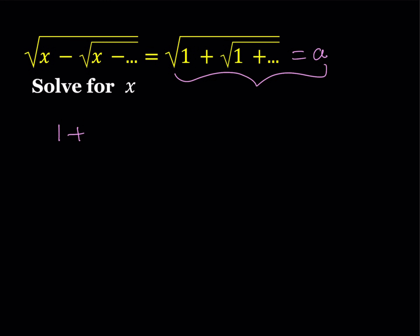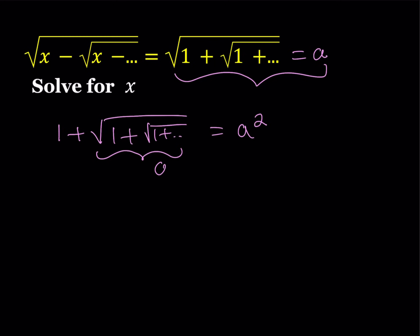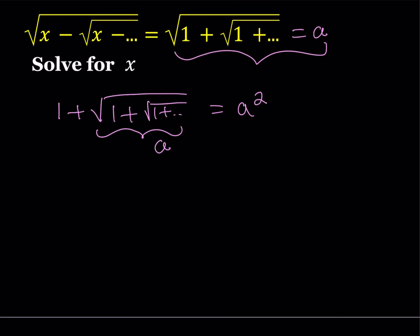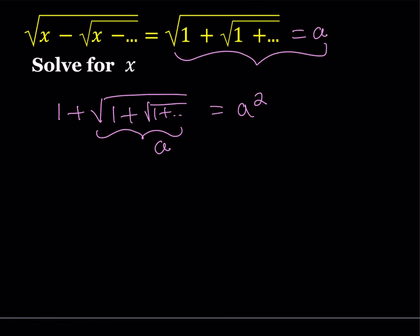If we square both sides, we get 1 plus the square root of 1 plus the square root of 1 plus dot dot dot equals a squared. Of course, when we square both sides, we have to be careful because we may introduce extraneous roots. But notice that this inner expression is also the same as a, so we get a quadratic equation. I'll talk about the golden aspect of this shortly.